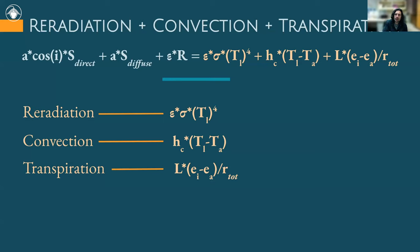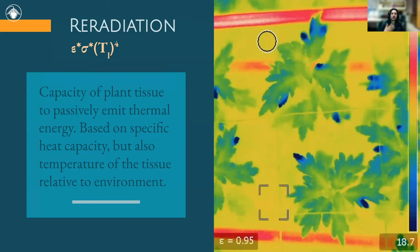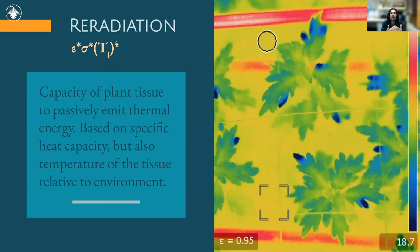Now let's think about the other side of the equation: re-radiation, convection, and transpiration. These characterize the difference between passive and active heat loss, with re-radiation being more passive, transpiration more active, and convection as a middle ground. Re-radiation is essentially passive or sensible heat loss — you've experienced this touching a hot pan. When two things of different temperature come in contact, they equilibrate. Notice in this thermal image of leaves, the more finely dissected leaf tips are cooler in temperature than the center parts. More exposure and interface means more rapid equilibration with the surrounding environment.